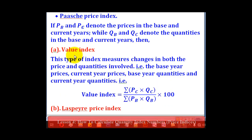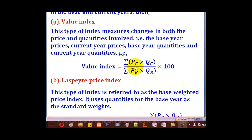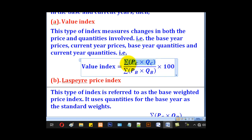For the value index, we involve all four variables: the price in the current year, price in the base year, quantity in the current year, and quantity in the base year. It is given by the formula: the numerator is the summation of PC times QC for all items, and the denominator is the summation of PB times QB for all items, everything multiplied by 100. That is the formula for value index.